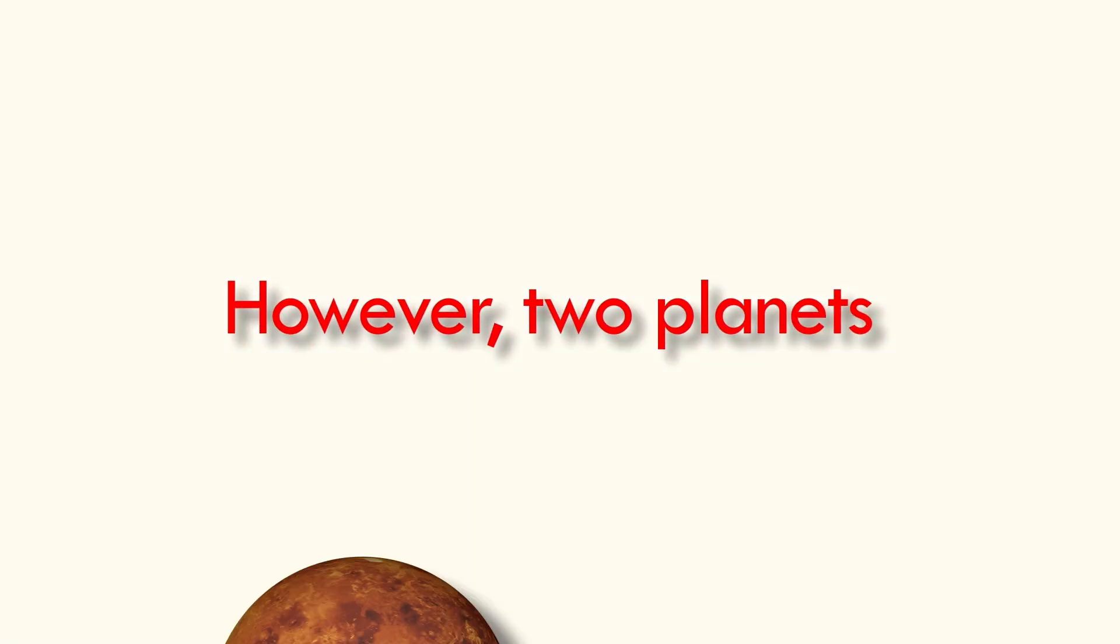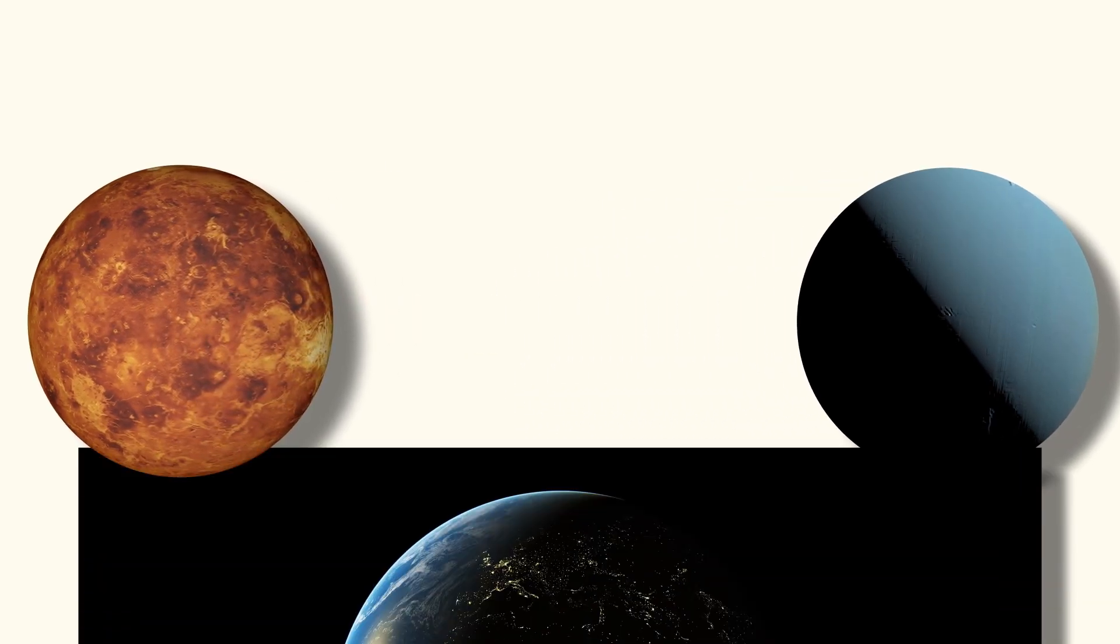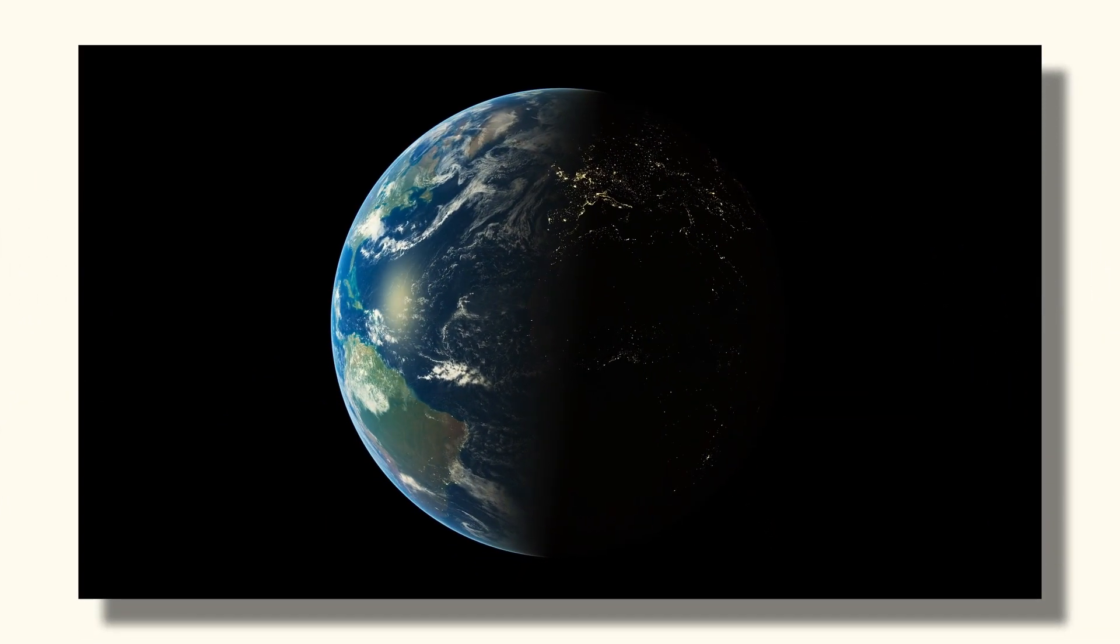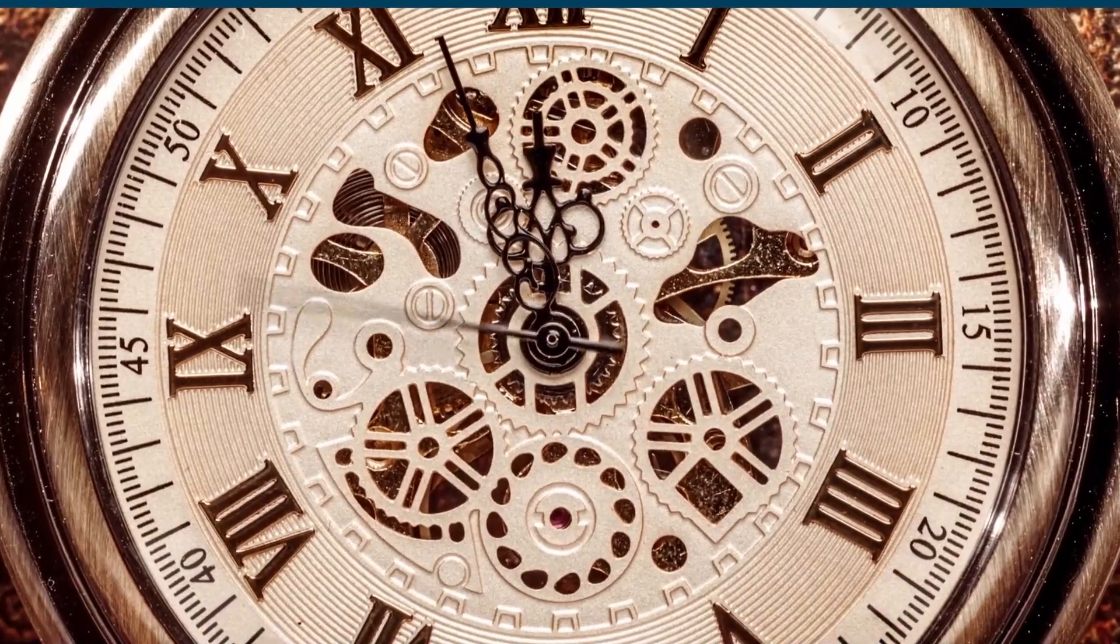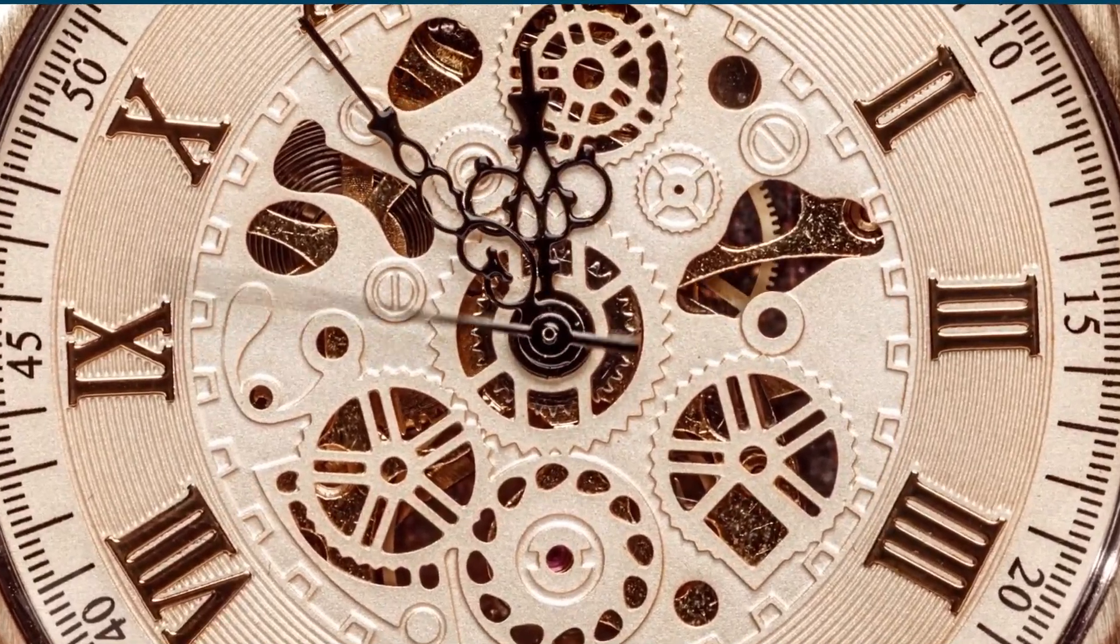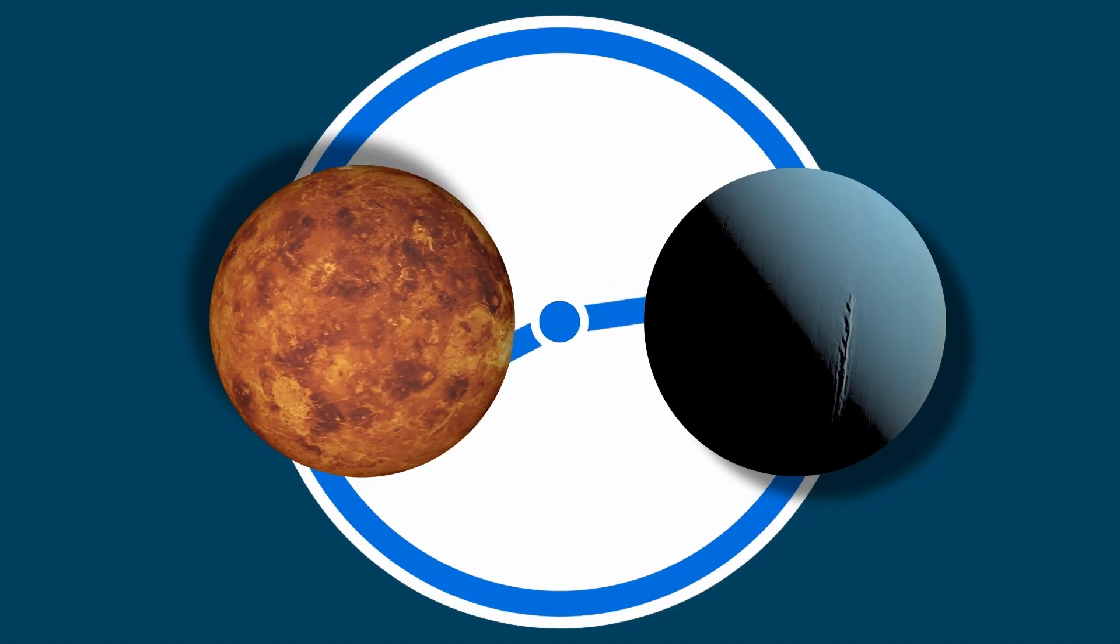However, two planets, Venus and Uranus, do not conform to the same pattern and instead rotate in the opposite direction to Earth and the majority of the other planets. Unlike the majority of the planets, which employ an anti-clockwise rotation or prograde movement pattern, Venus and Uranus rotate in a clockwise or retrograde direction.